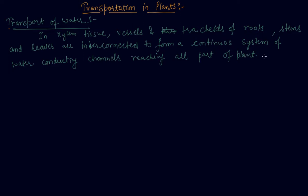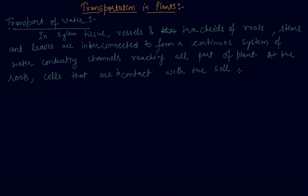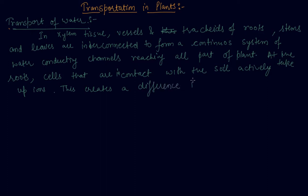At the roots, the cells that are in contact with the soil actively take up ions from the soil. These create a difference in the concentration of these ions between the root and the soil.